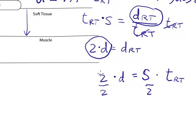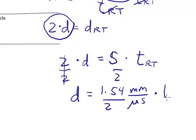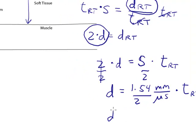which cancels there. So my distance to the reflector is equal to the speed in soft tissue, which is 1.54 mm per microsecond, divided by 2 times the round-trip time. So this comes out to be the distance is equal to 0.77 times time.